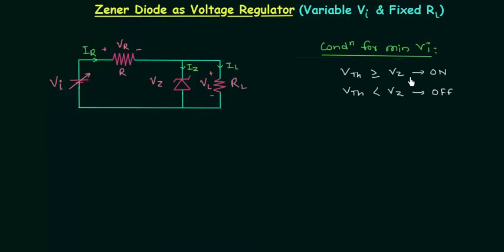We want to turn on the Zener diode, so VTH must be equal to VZ. VZ is the minimum voltage that must be applied across the Zener diode to turn on, and I will use this condition to obtain the condition for minimum input voltage. VTH is equal to VI multiplied by RL divided by R plus RL, and this is equal to VZ.